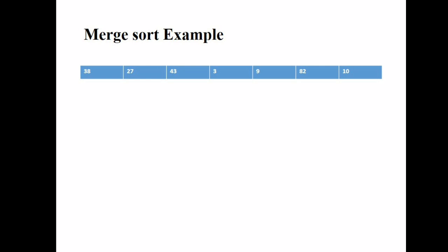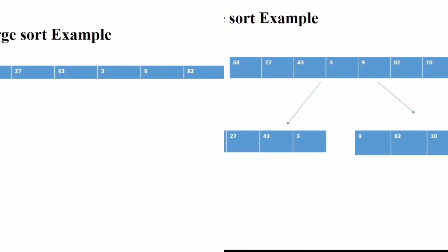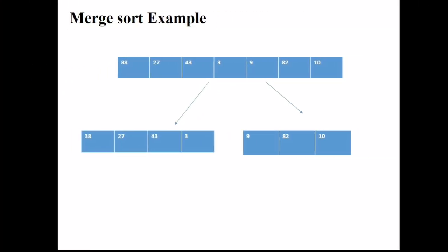This is an array: 38, 27, 43, 3, 9, 82, 10. Now, dividing array into two halves. First half having the elements like that: 38, 27, 43, 3. And another half: 9, 82, 10. So now divide these two halves after that recursively.